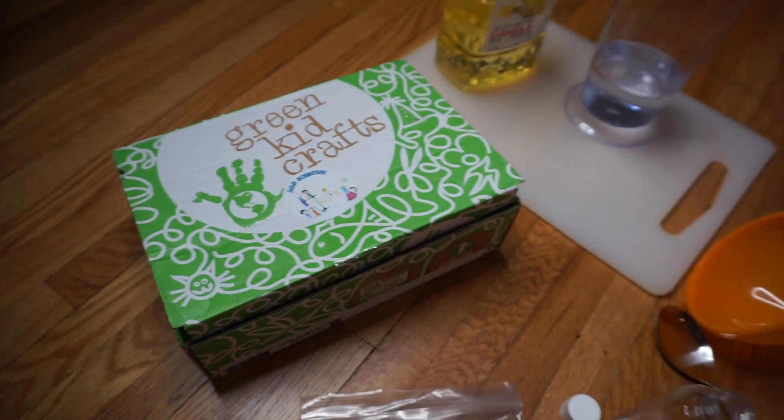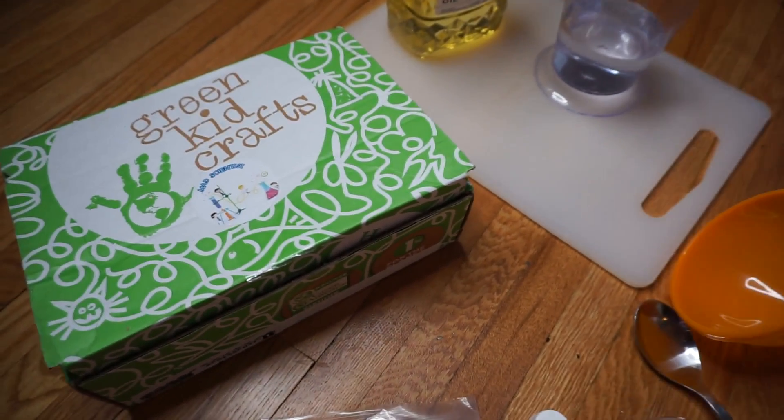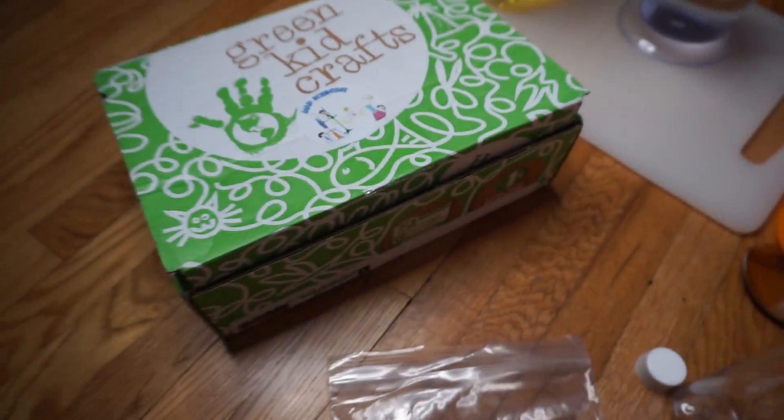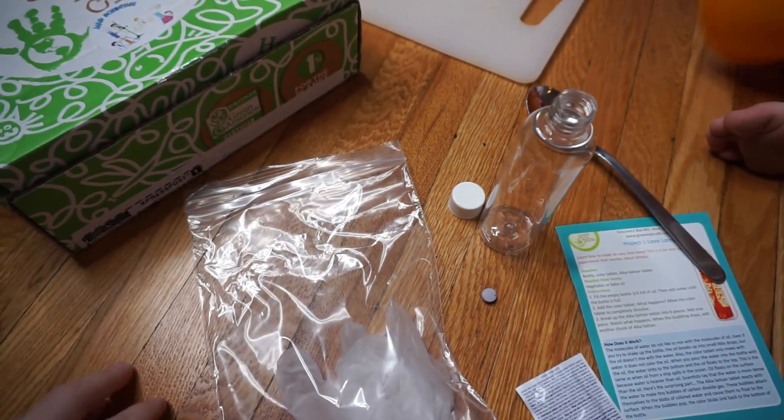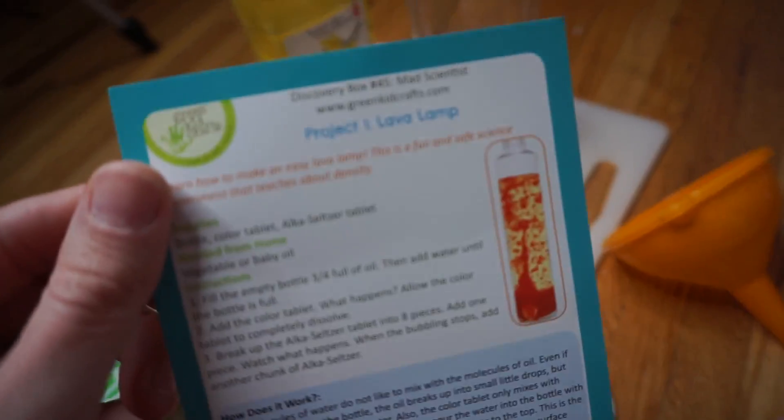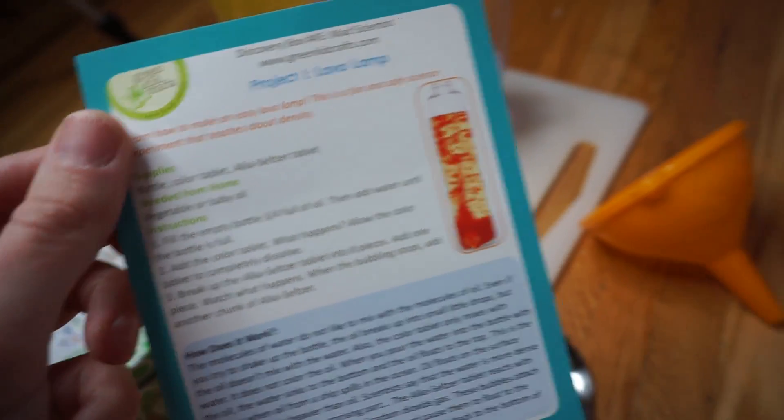Hi friends and welcome back. Today we're going to be doing a craft from one of our Green Kid Crafts. This is part of the Mad Scientist box number 45, and today we're going to be doing the lava lamp. Are you excited?